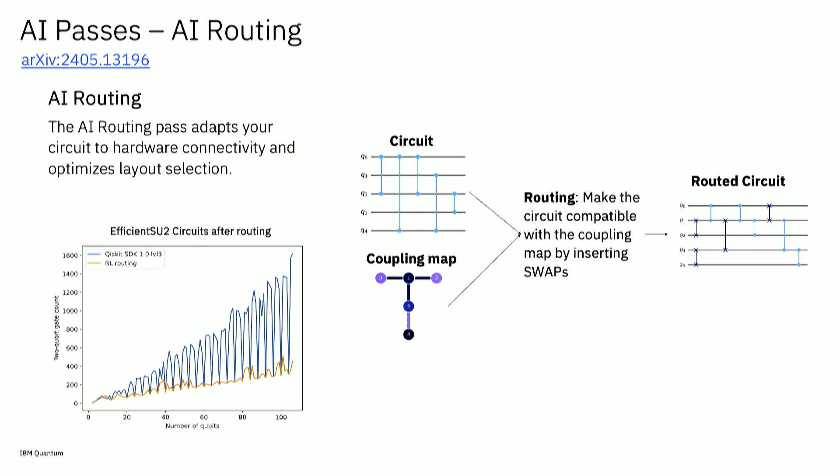This is the same as what Matthew explained. We're basically taking a circuit and inserting swaps to make it compatible with a coupling map. This is a hard problem, in particular because it's entangled with the layout problem. We trained a neural network to know where to insert swaps to minimize the number of swaps. The way it works is similar to the saver swap, just instead of designing the heuristic, this heuristic is learned by reinforcement learning.